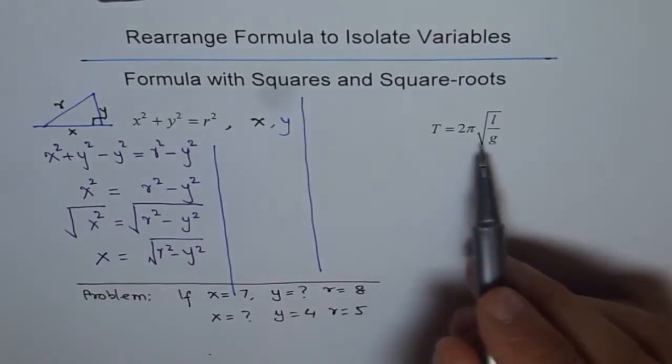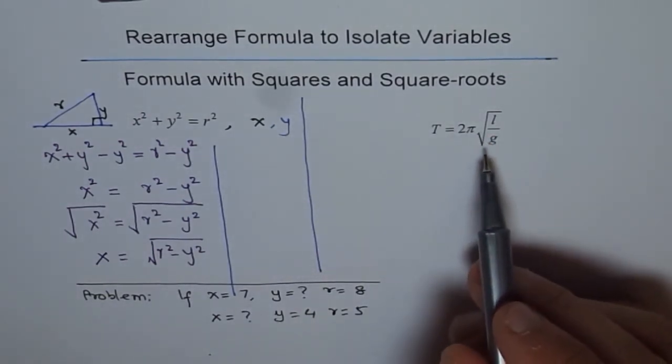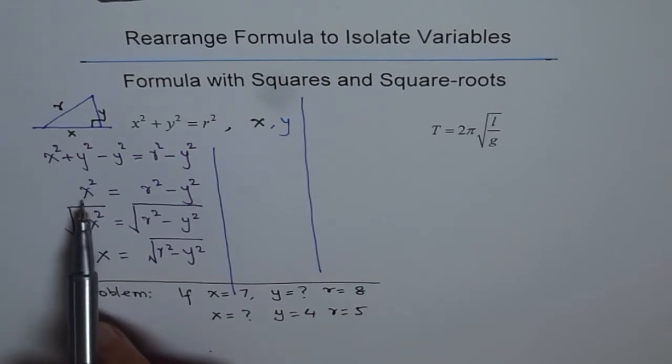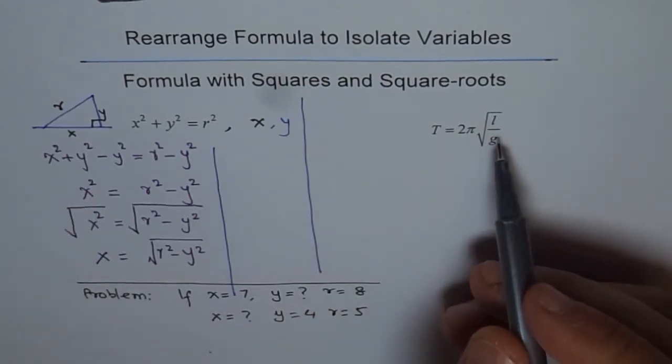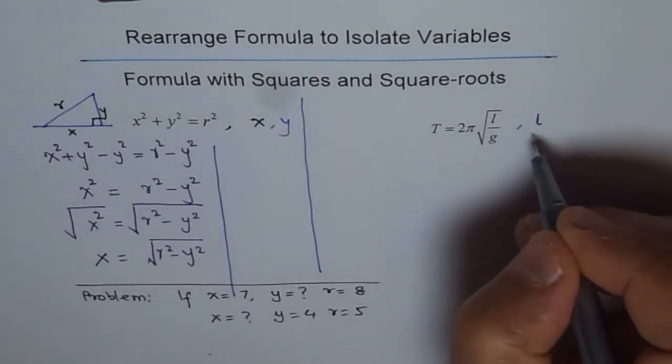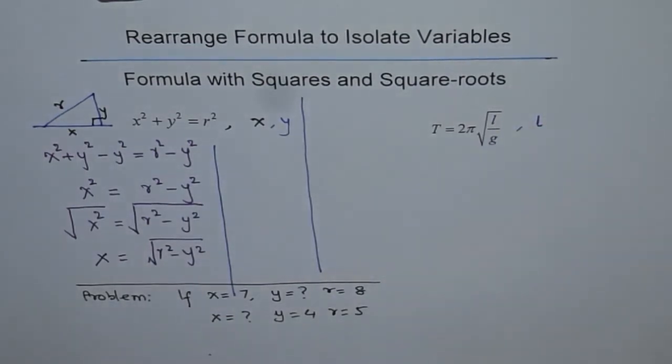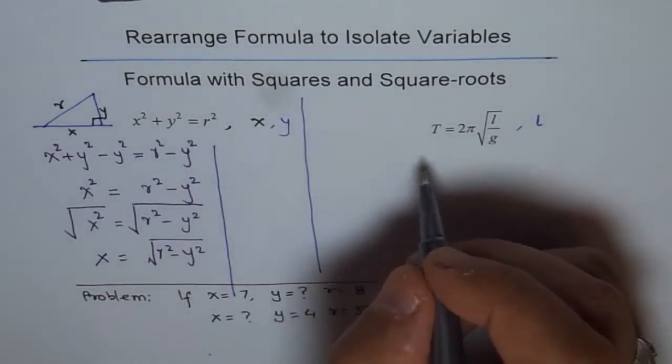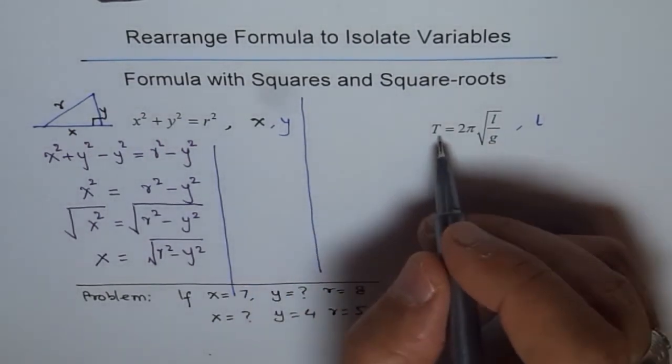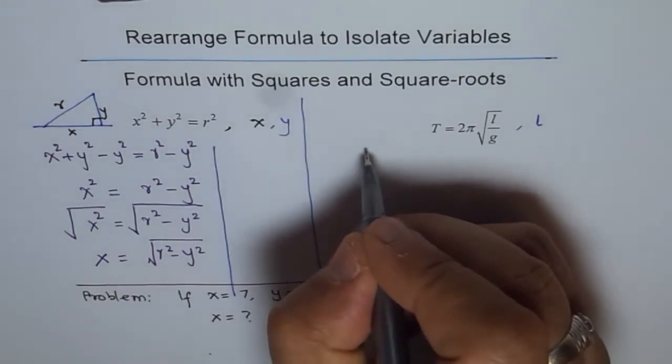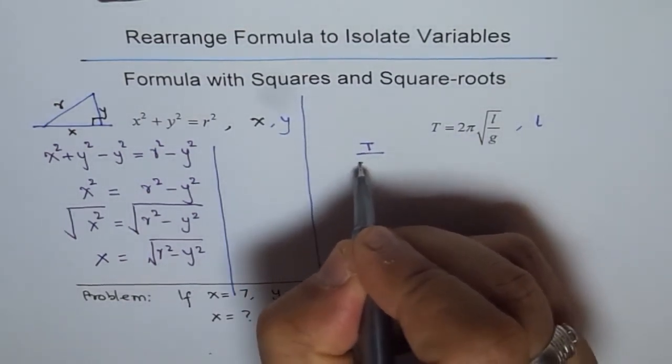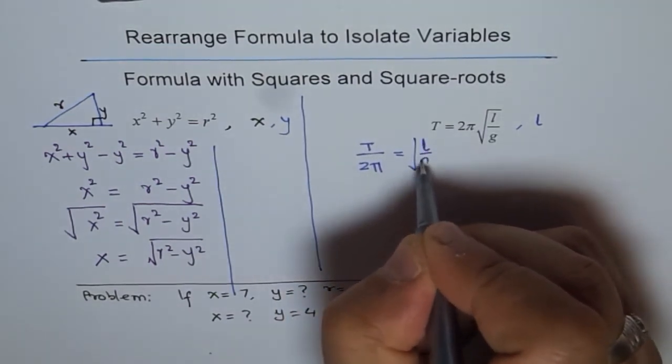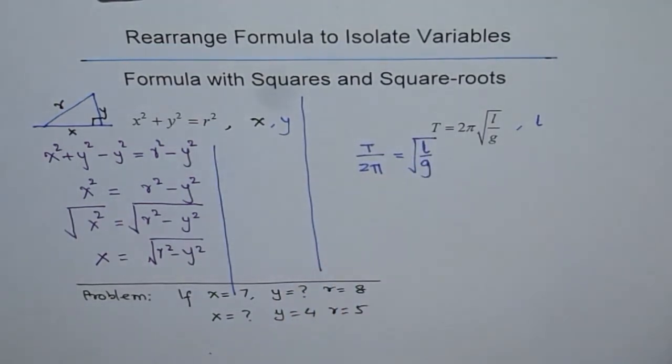Now, that is another formula where we have square root. Now, here we did, we wanted to get x from square, so we did square root. Here we want to get l, for example. Let us try to find out how to find l. So, if you want to find l, we will square both sides. Let us square both sides. Well, what we can do is first rearrange. So, let us divide by 2π. So, the first step we will do is T divided by 2π equals to square root of l over g.